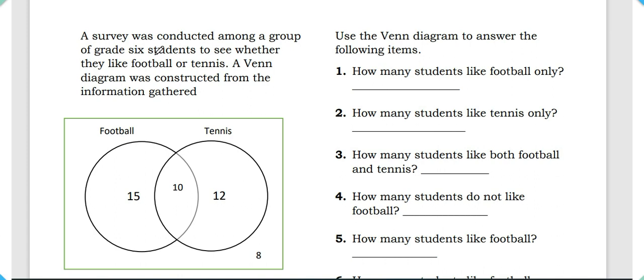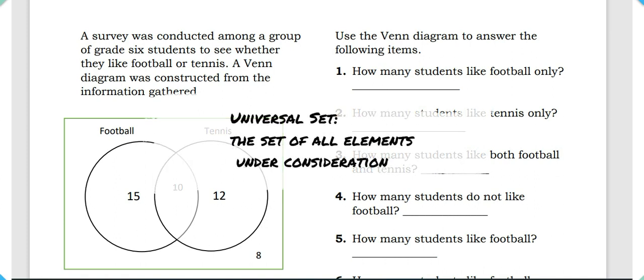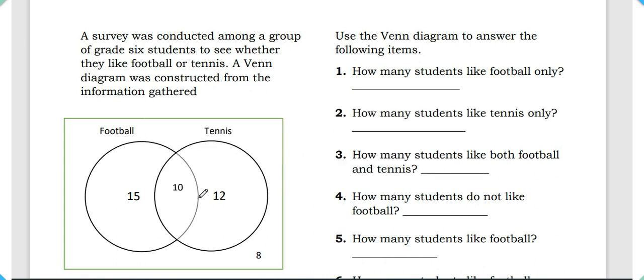What about a universal set? Think of the word 'universe' — everything, right? So a universal set contains everything — all elements that are in our problem. In our case, our universal set would be the entire group of Grade 6 students included in our survey. The concept of a universal set is relevant because elements within it can be further grouped into smaller sets, given that those elements have something in common that is different from the other elements.